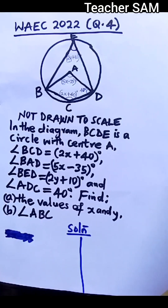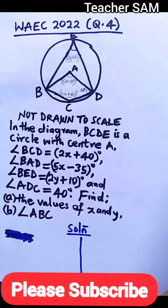Question 4. In the diagram, B, C, D, E is a cycle with center A. Angle BCD is equal to 2x plus 40 degrees. Angle BAD is equal to 5x minus 35 degrees.